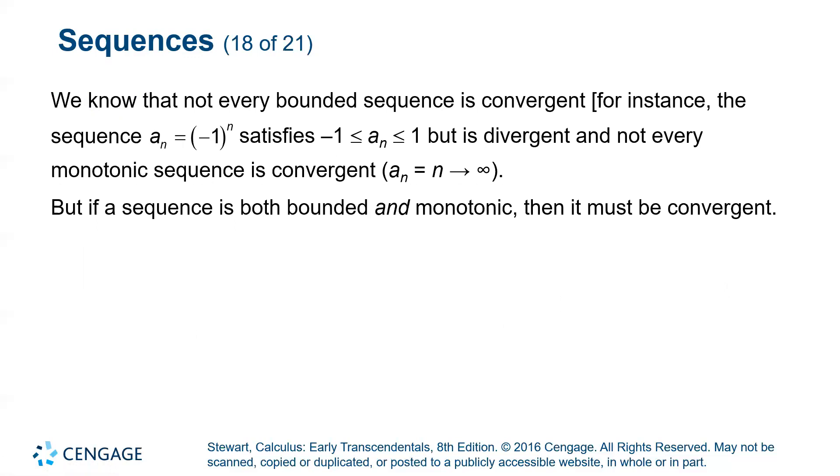Something sort of interesting is that not every bounded sequence is convergent. An example of that would be negative one to the n. Remember this bounces back and forth between negative one and positive one. So it's bounded quite clearly between negative one and one, but it never converges to a value. It's constantly going back and forth between negative one and one and thus that sequence is divergent.